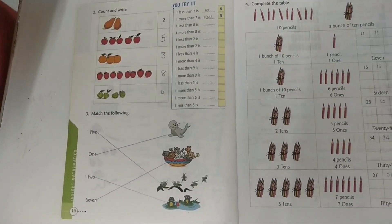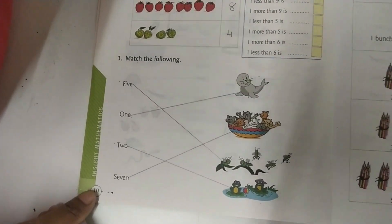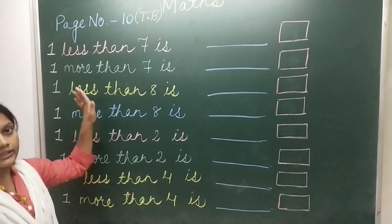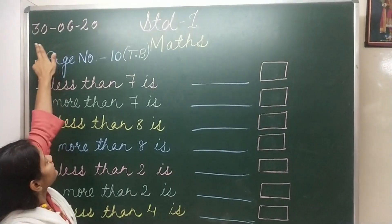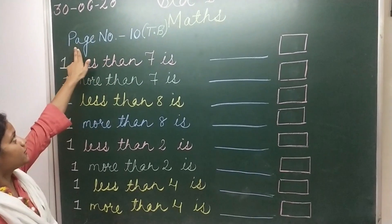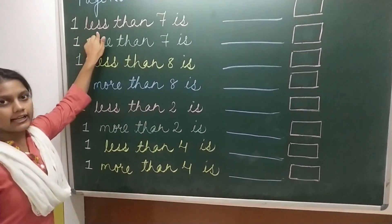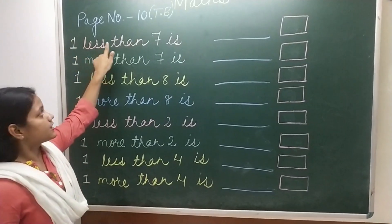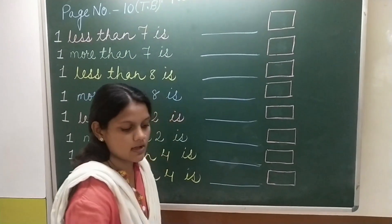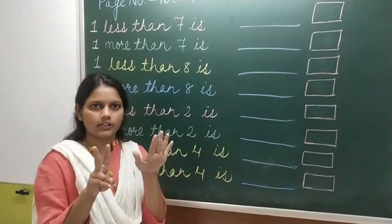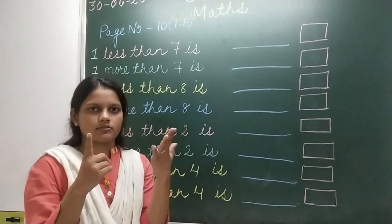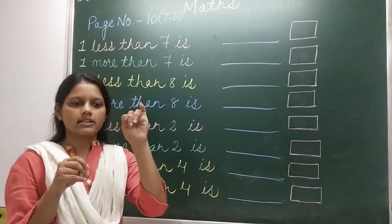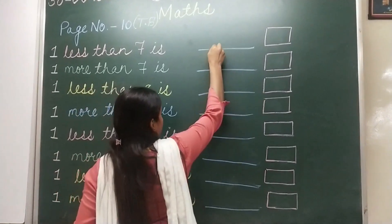Now take out your maths textbook, page number 10, and here you have to write. Now look at today's date: 30/6/20. Page number 10. 1 less than 7. So I have 7 fingers and 1 less means 1 cut. So how many fingers? 1, 2, 3, 4, 5, 6. The answer 6 is already written in your textbook — write 6 and number 6 in the box.